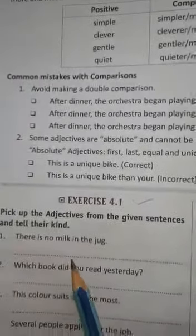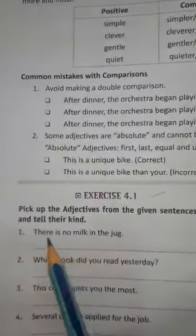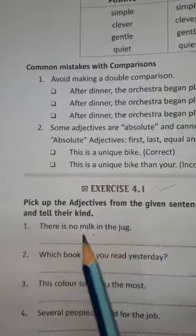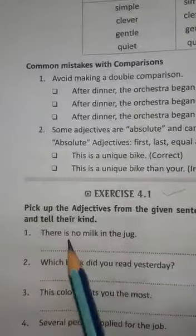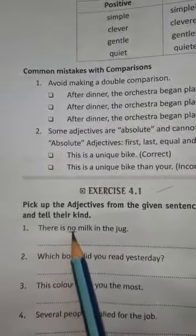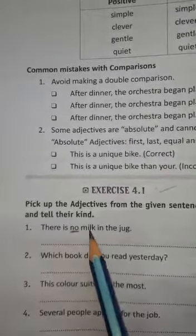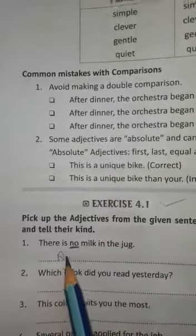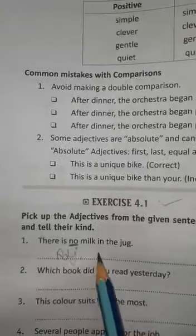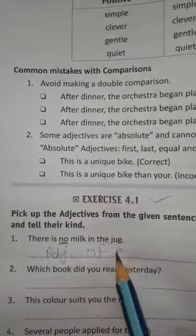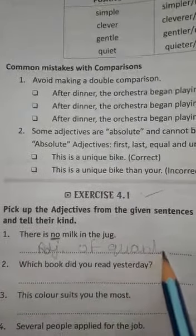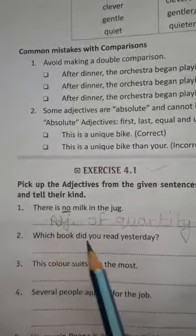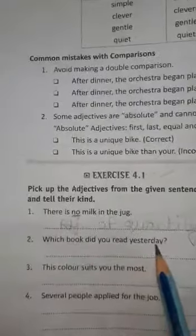At number one, we are having: 'There is no milk in the jug.' That means there is no milk. Now we see that 'no' is the adjective here, and 'milk' is the noun. The kind of adjective — which kind does it belong to? This is adjective of quantity: how much milk in the jug? There is no milk, so adjective of quantity is applied here.